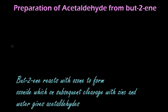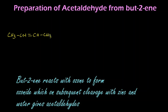In this video we are going to learn the preparation of acetaldehyde from but-2-ene, that is from an alkene. This is otherwise known as ozonolysis of alkene. Let's write the structure of but-2-ene: CH3-CH=CH-CH3.